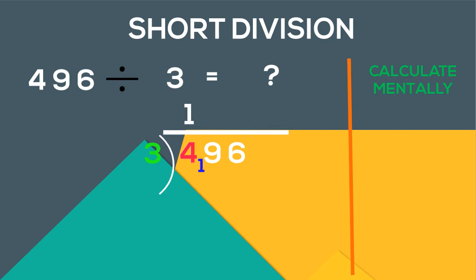Then we will take 19 from here and see how many times 3 goes in 19. 3 goes 6 times in 19 and the remainder is 1. So 6 goes up and 1 in bottom.